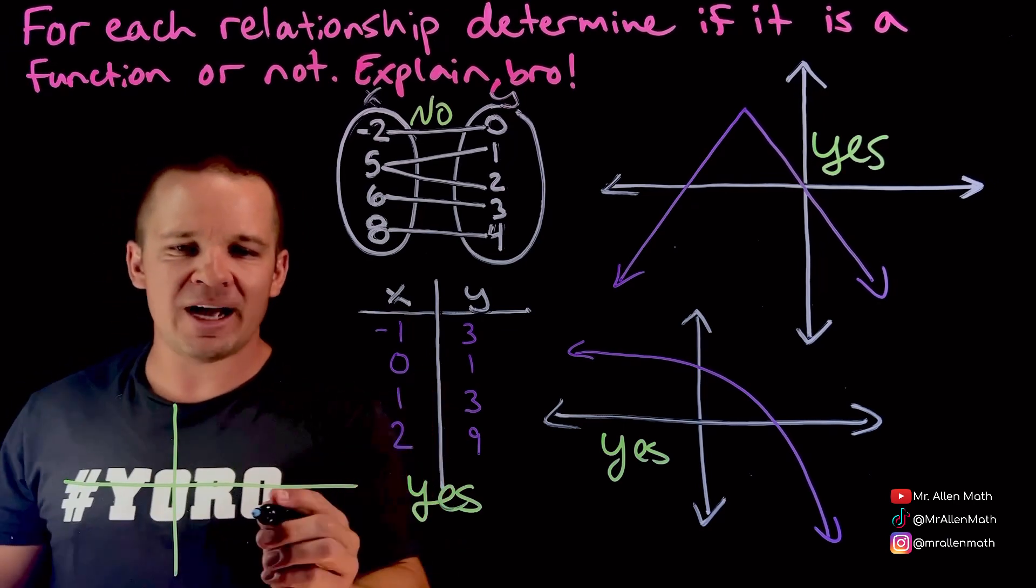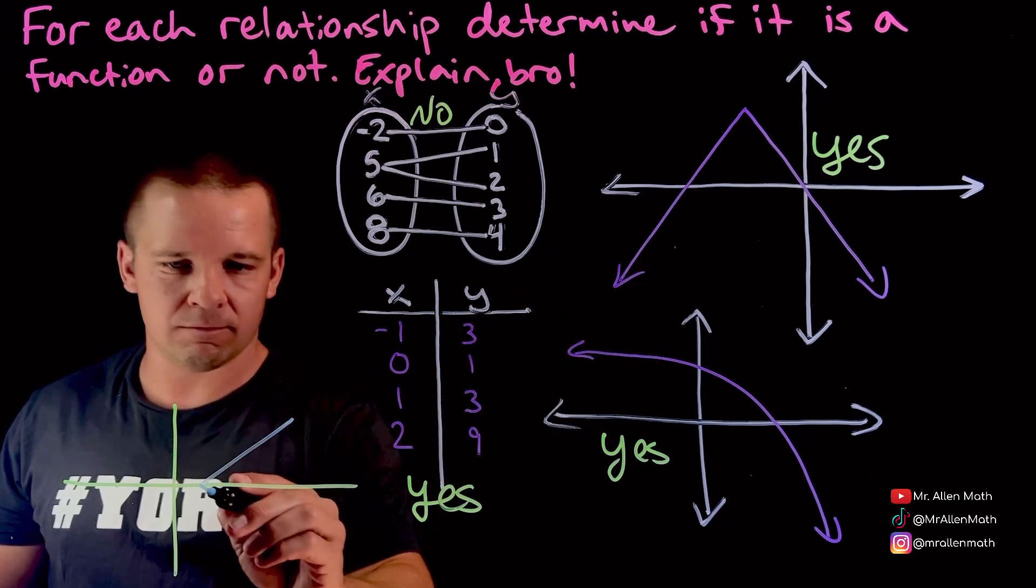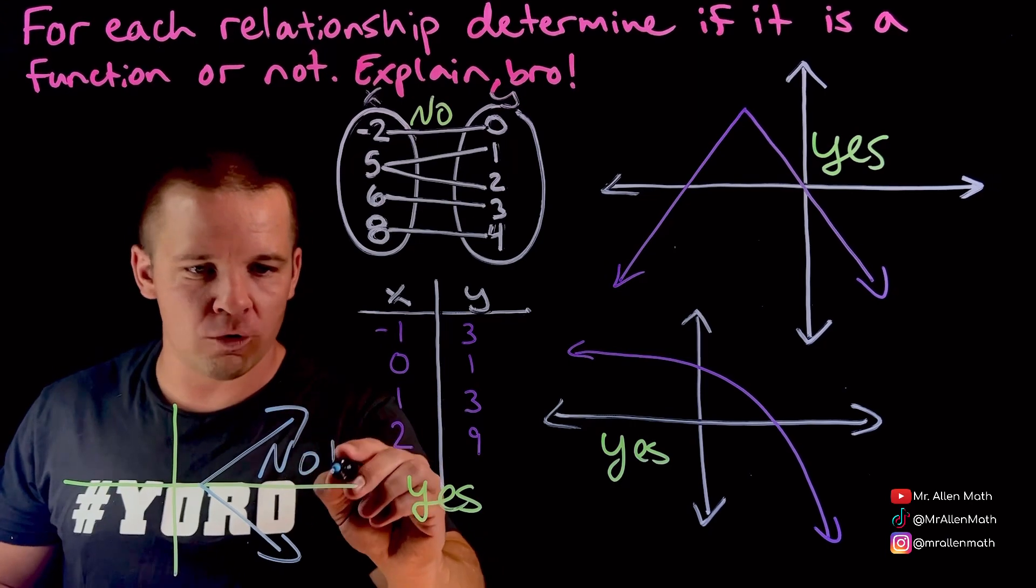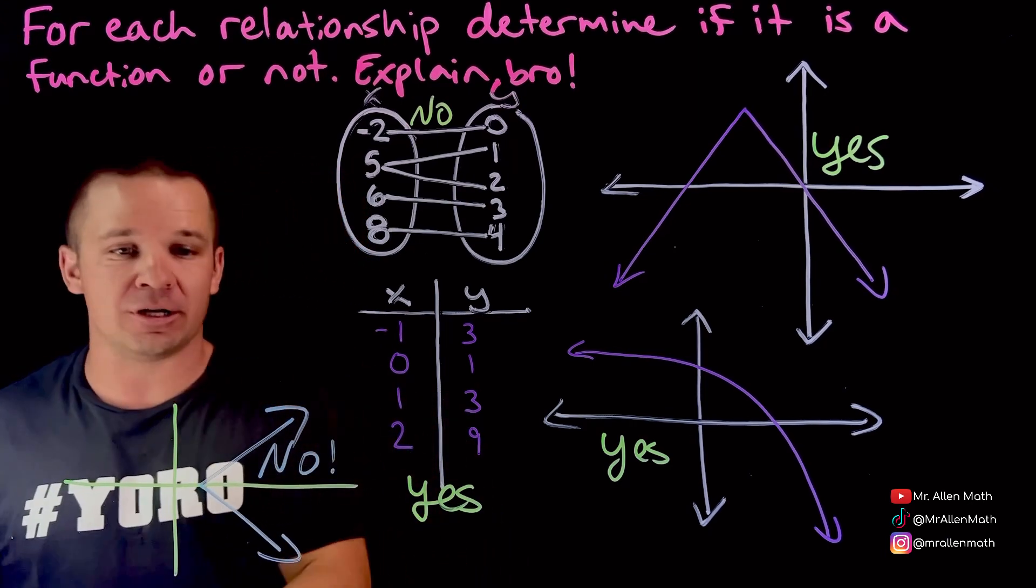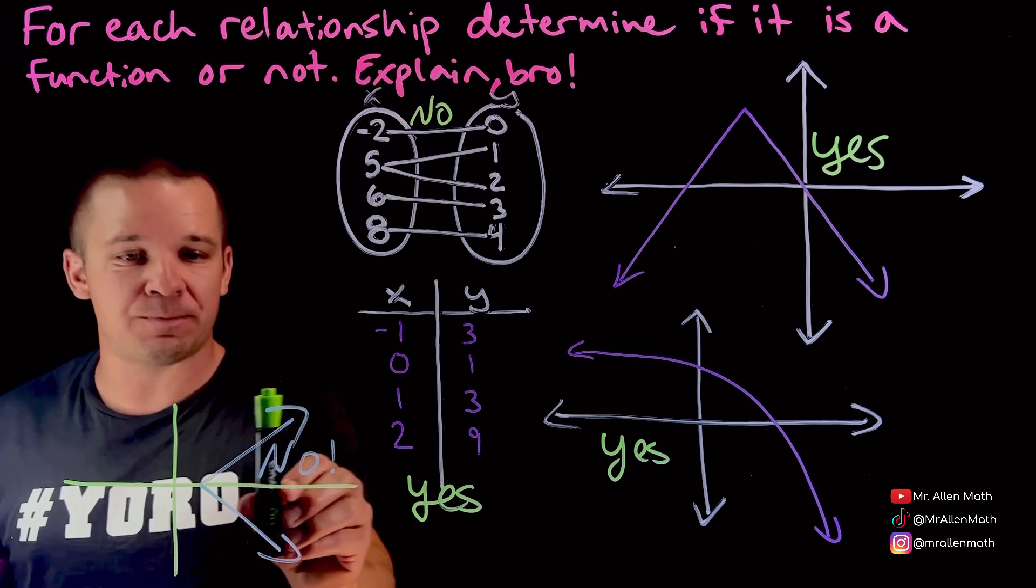If I had something like this, let's just take our absolute value and have it like the other orientation. This is not, no, that is not going to be a function. It would cross through a vertical line more than once at any of these spots over here, so it's not a function.